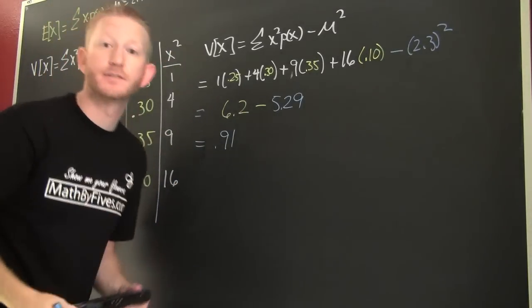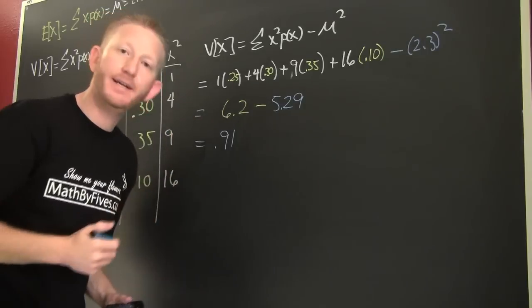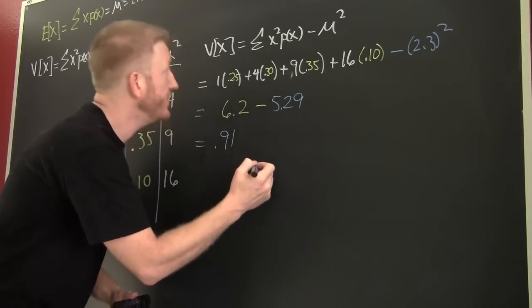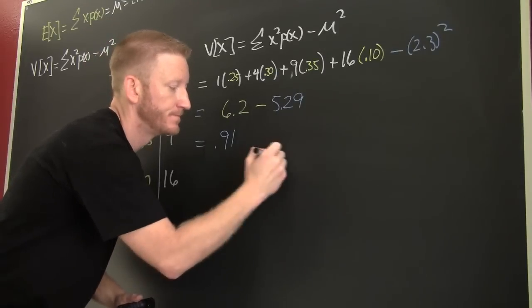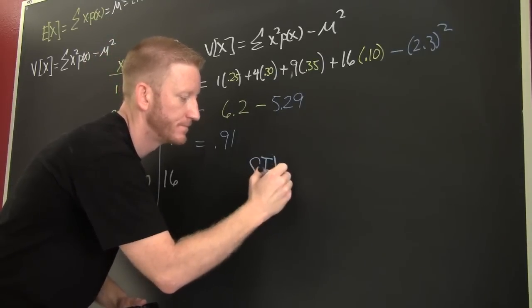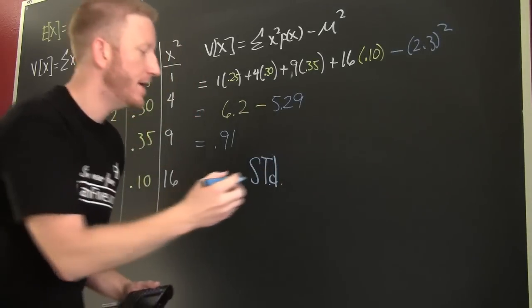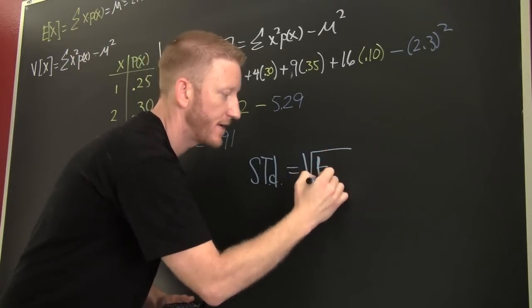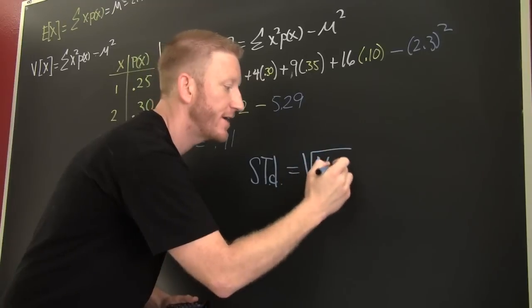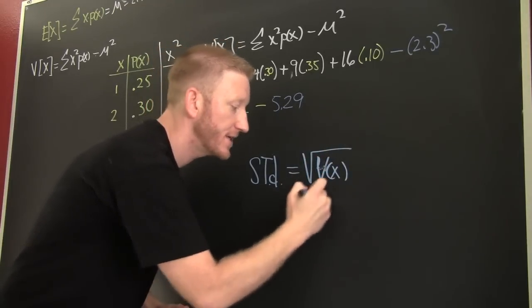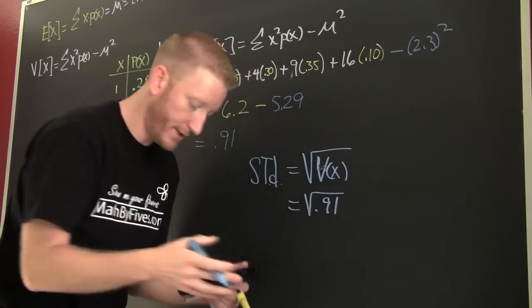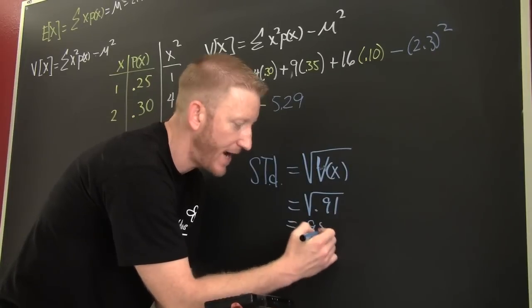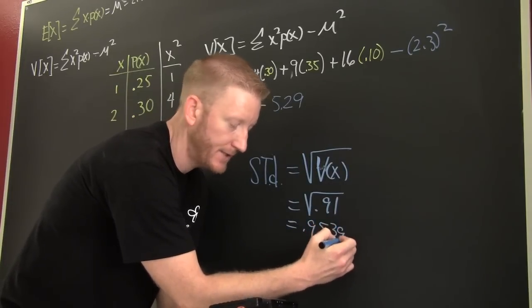And then, that's the variance. Extra. Bonus. How are you going to find the standard deviation given the variance? You know that your standard deviation is the square root of the variance. That's not a V, but that is the variance of X. Yeah. So this is going to be the square root of 0.91. Finish him. Woo! 0.9539-ish.